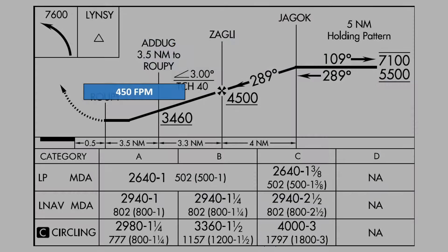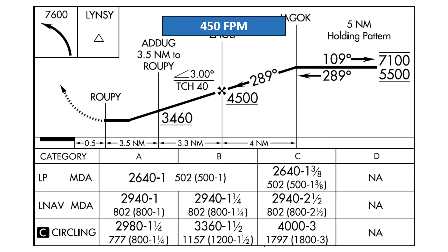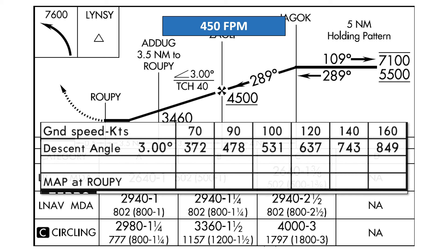It's about 450 feet per minute. The only piece of information we need from the plate is the vertical descent angle, which is a standard 3 degrees. A great rule of thumb for a standard angle like this is to take our ground speed — 90 — and multiply by 5 to get 450 feet per minute. If we're using the Jeppesen approach plates, these figures are actually calculated for us.